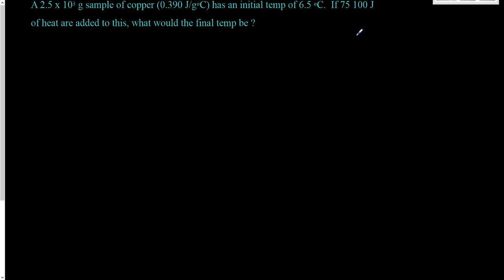We have another heat problem to look at. A 2.5 times 10 to the third gram sample of copper — with a given specific heat capacity — has an initial temperature of 6.5 degrees Celsius. If 75,100 joules of heat are added to this, what would the final temperature be?